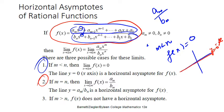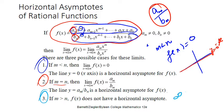Case 2: if m equals n, then the horizontal asymptote is the ratio of the leading coefficients — aₘ over bₙ. Case 3: if m is greater than n, then the horizontal asymptote does not exist — it is undefined.